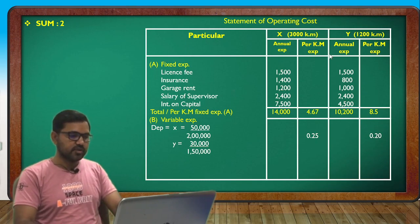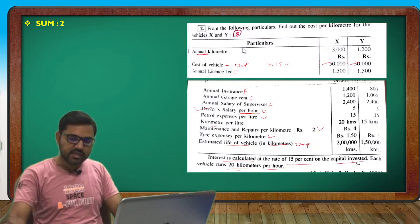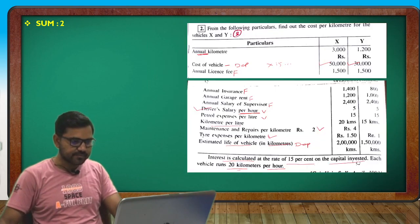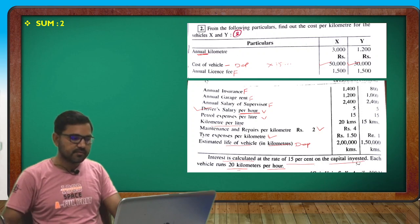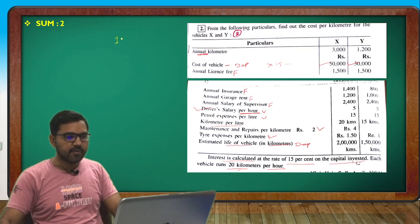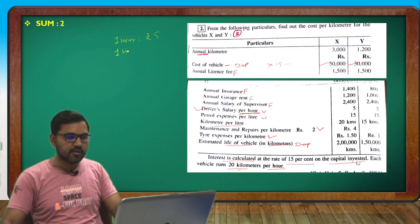Now for variable driver salary: driver salary is rupees 5 per hour. The vehicle runs at 20 kilometers per hour, so 1 hour equals 20 kilometers. Driver salary per km = 5 rupees per hour divided by 20 km per hour = 0.25 rupees per km.